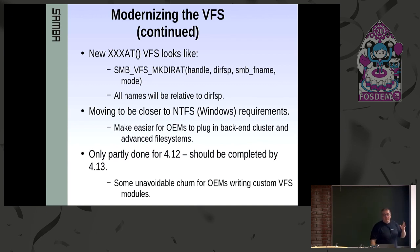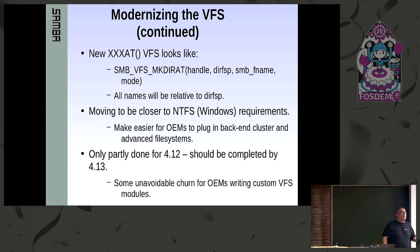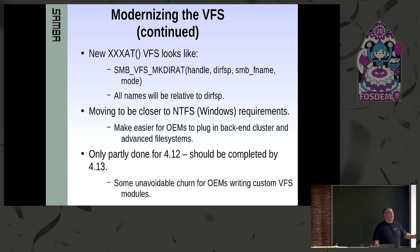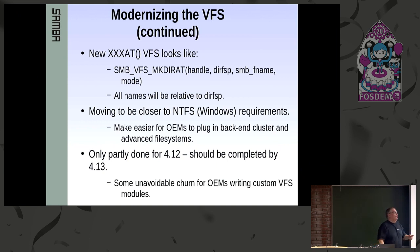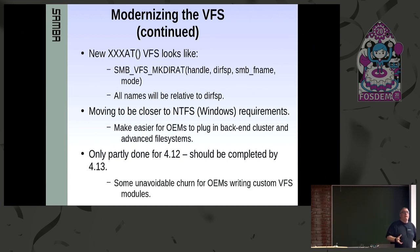Our new VFS is now SMB_VFS_MKDIRAT — instead of just passing a standard integer file descriptor, we pass a pointer to one of our internal file open structures which has a lot more stuff attached. All names passed in become relative to the directory file pointer passed in, which moves us much closer to NTFS Windows-style requirements. One thing Windows really did get right is that everything is handle-based with very few path name operations — a path name is translated internally into a handle and that's what is operated on. When we're finished, this should make it a lot easier for VFS OEMs to plug in advanced clustered file systems and make Samba an easy front end for clustered Ceph and others.